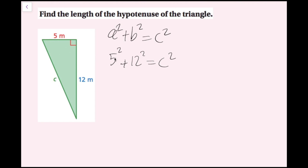Now I'm going to simplify. I know 5 squared is 25, and 12 squared is 144, and then you can add this up on paper or in your head. 25 plus 144 is 169.